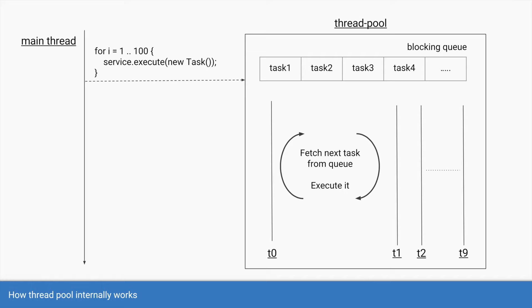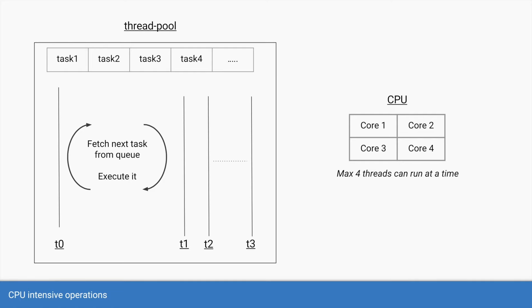Since all 10 threads attempt to take tasks from the queue concurrently, you need the queue to handle concurrent operations safely — that is why a thread pool uses a blocking queue, which is thread-safe. So what is the ideal pool size? The answer is not simple; it depends on the type of tasks you want to execute. If you have CPU-intensive operations — for example, an algorithm to create a hash or a cryptographic function within the run method — the task will take a lot of CPU.